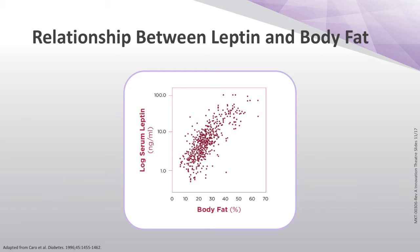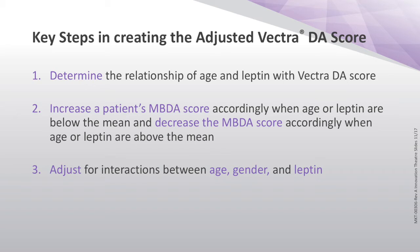So it provided an opportunity. Here is a general population relationship between leptin and body fat — you don't need an R value to see that something is going on. The key steps in creating this adjusted Vectra, this new test, was to determine the relationship between these variables. And then, as statisticians do, we understand the principles of adjusting for multiple variables, perform these statistical analyses, and tend to smooth out the extremes. That's exactly what adjustment does in a functional sense.